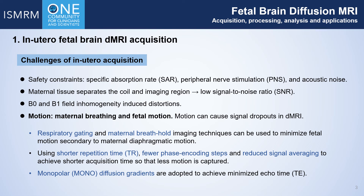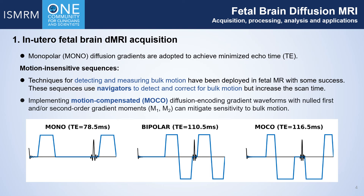Imaging techniques such as breath holding and respiratory gating can suppress maternal motion and minimize fetal motion secondary to maternal diaphragmatic motion. The faster the acquisition is, the less motion is captured. So to reduce acquisition time, shorter TR, fewer phase encoding steps, and reduced signal averaging are usually used. To achieve minimized echo time, monopolar instead of bipolar diffusion encoding gradients are adopted.